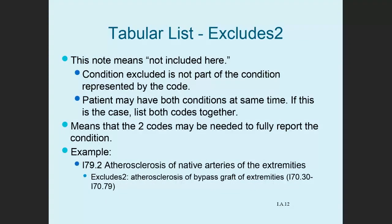Excludes 2 notes are different. In this case, if documented, you may list two codes. Excludes 1 means pick one generally, except for that exception. Excludes 2 means 'not included here' — the condition excluded is not part of the condition represented by the code. Patients may have both conditions at the same time, and if documented, list both codes. For example, I79.2, atherosclerosis of native arteries of the extremities, has an excludes 2 note for atherosclerosis of bypass graft of extremities. A patient may have both, so you can report two codes.